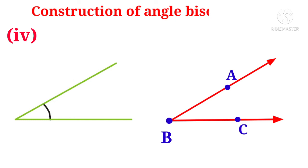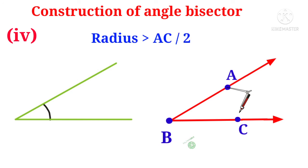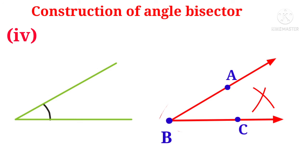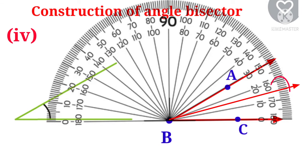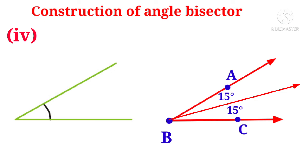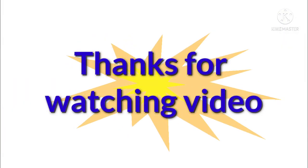Let us construct the angular bisector for angle ABC. Take more than half the length of AC as radius; with center A, draw an arc with a compass. With center C and the same radius, draw another arc cutting the previous arc. Draw a ray through point B and the intersection of arcs — this is the angular bisector for angle ABC. The protractor shows 15 degrees, so the total 30-degree angle is divided into two equal angles of 15 degrees and 15 degrees. Thanks for watching!